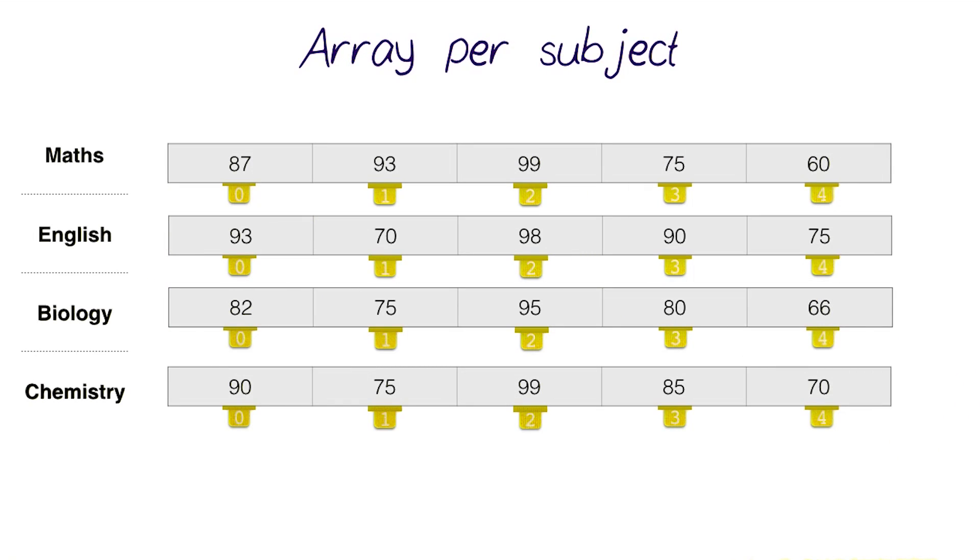So instead, we could possibly create an array for every subject rather than every student. And that way, we could easily calculate the average for every subject individually. But we can't loop over the grades for every student anymore.